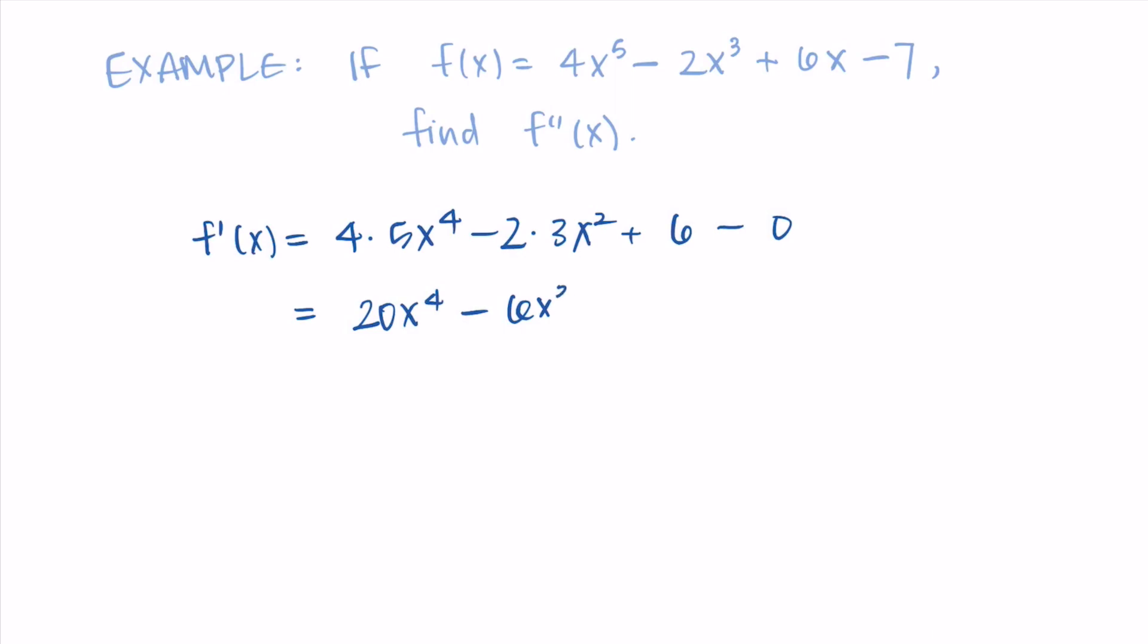Then to take the second derivative f''(x), I just do this again. I bring the exponent 4 down in front, bring the 2 exponent down in front, and the derivative of 6 is 0. So I have 80x^3 - 12x, and that's my second derivative of my original function.